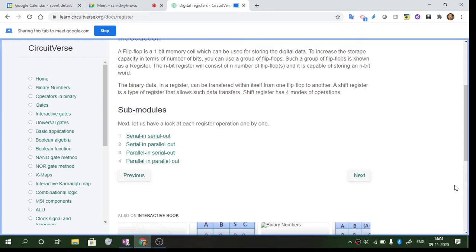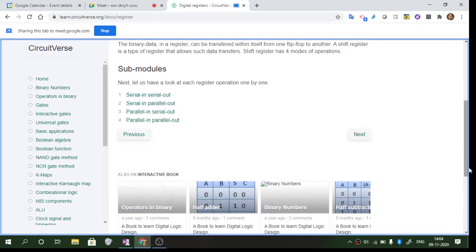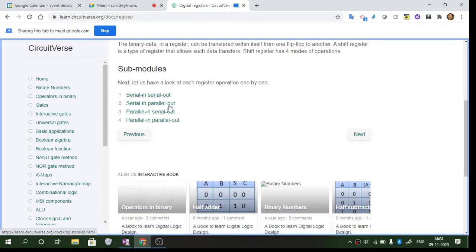If you cascade four flip-flops, it becomes a four-bit register. If you do eight flip-flops, it becomes an eight-bit register. Basically, these registers are used for shifting of information. Based on this, we have four different types of registers: serial in serial out, serial in parallel out, parallel in serial out, and parallel in parallel out. Let us see each of them separately.